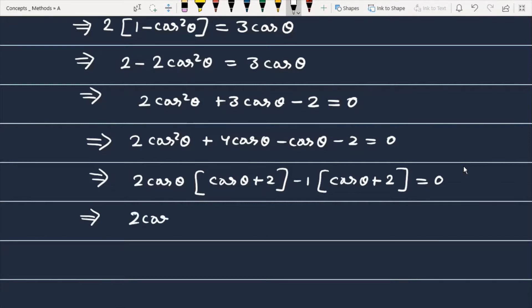In the next step, we can write that is 2cosθ minus 1, this is the first part of the factors, and the second part is cosθ plus 2 and this equals 0.